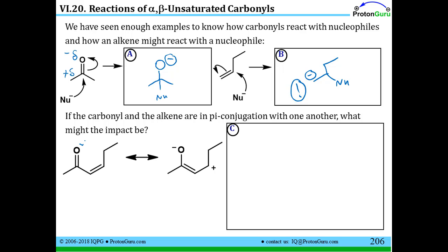What if we have both the carbonyl and the alkene functional groups right beside each other in the same compound? The type of compounds I'm talking about are compounds in which the alkene — the unsaturated unit — goes from the alpha carbon to the beta carbon, where we have the alpha carbon right next to the carbonyl.